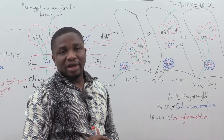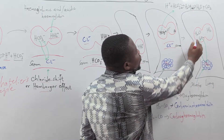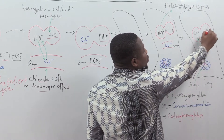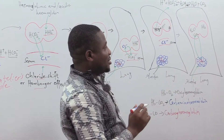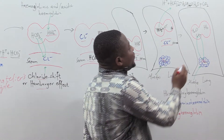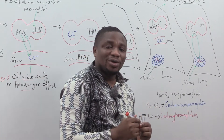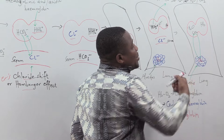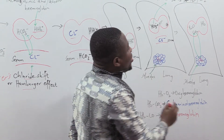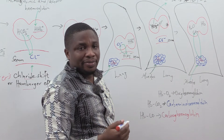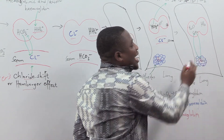This reverse reaction is also driven forward by Le Chatelier's principle, producing water and carbon dioxide in the red blood cell. The CO₂ formed then diffuses readily into the alveolus of the lung, while the higher oxygen concentration in the alveolus allows oxygen to diffuse into the red blood cell and bind with hemoglobin to form oxyhemoglobin.